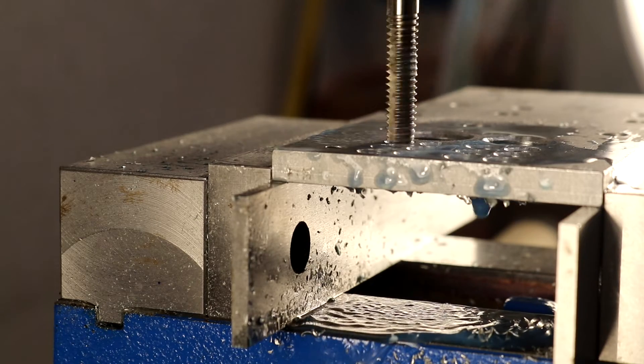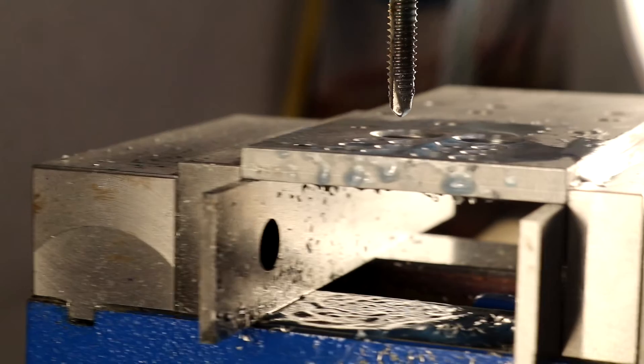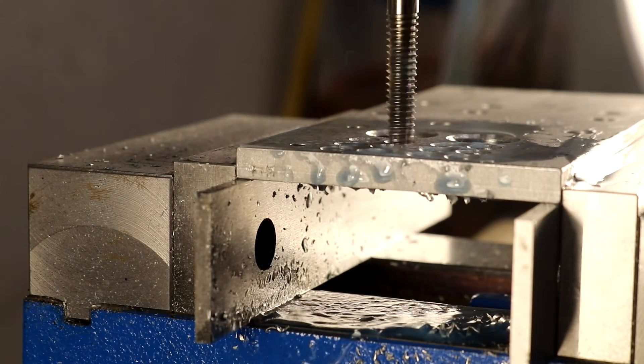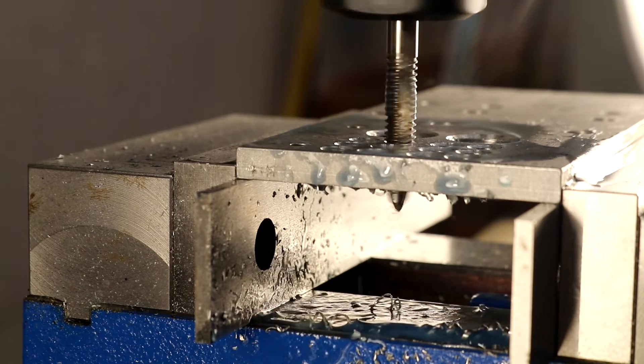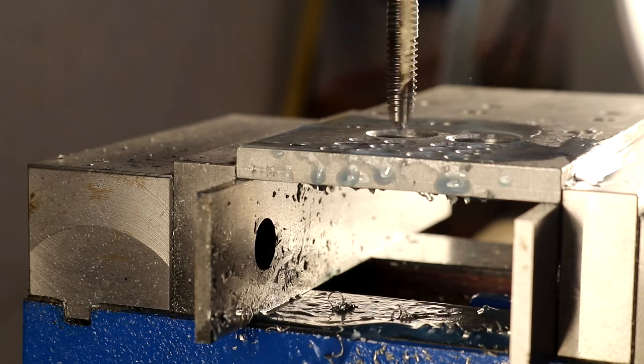From the side you can see how far the spiral point tap needs to come down in order to fully tap this through hole. Besides the spiral point tap, we'll also try a forming tap.